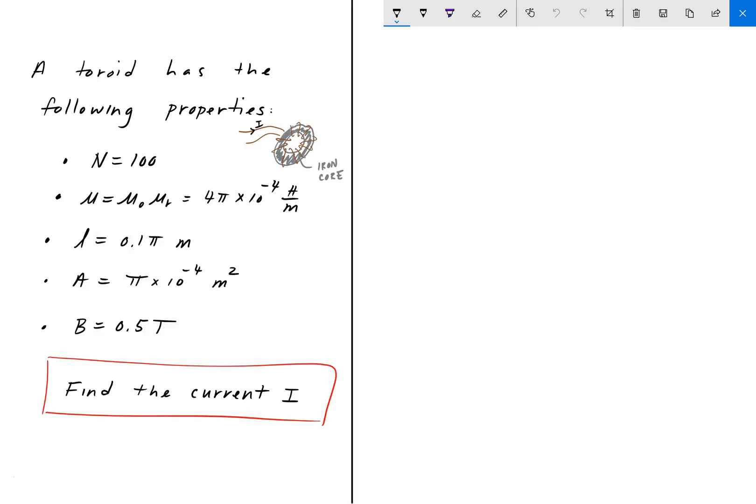It has 100 turns. The magnetic permeability is 4π × 10^-4. It has a length of 0.1π meters, a cross-sectional area of π × 10^-4 meters squared, and a magnetic field of 0.5 tesla. We're asked to find the current going through this toroid.